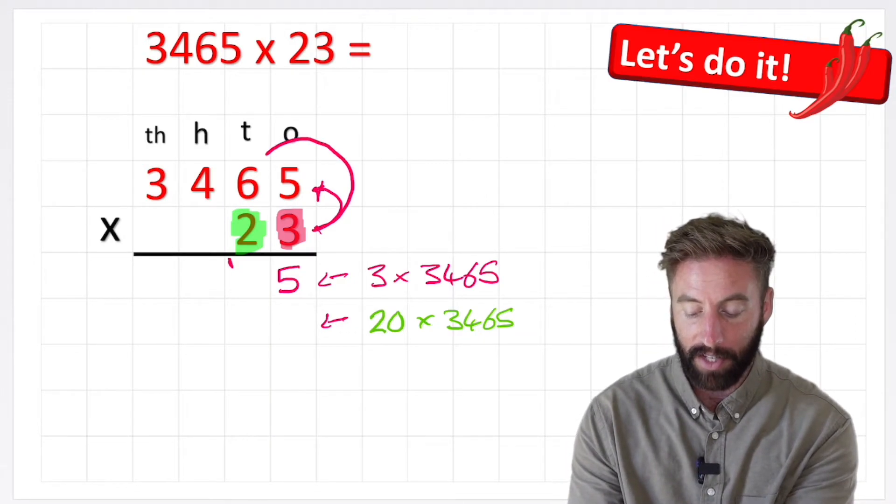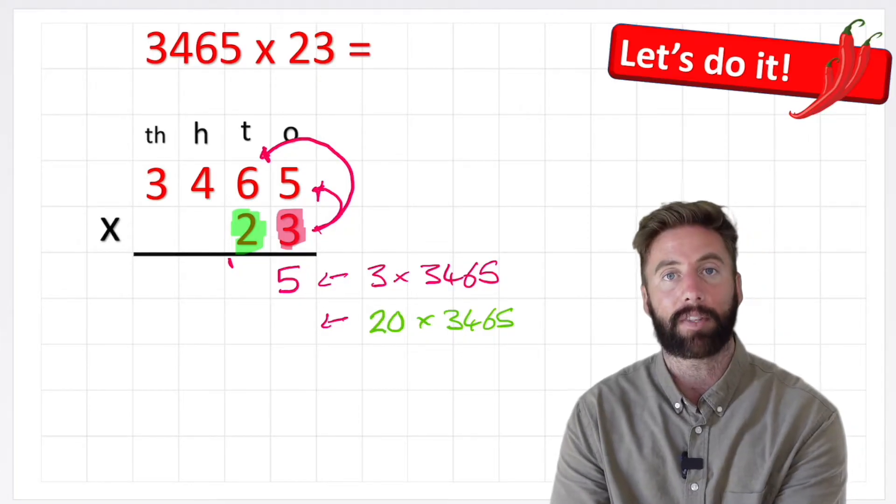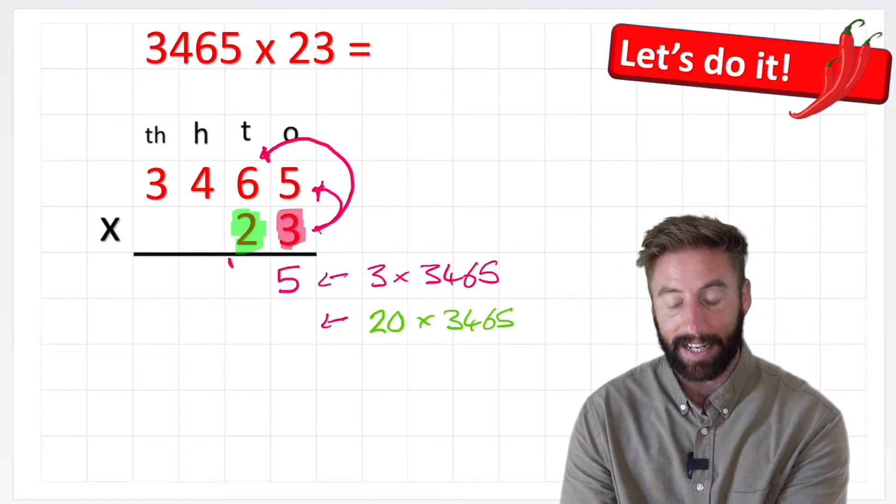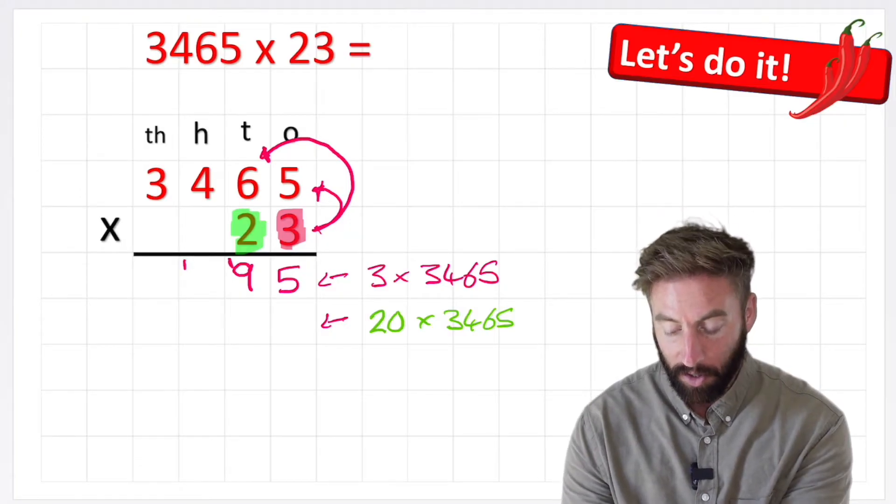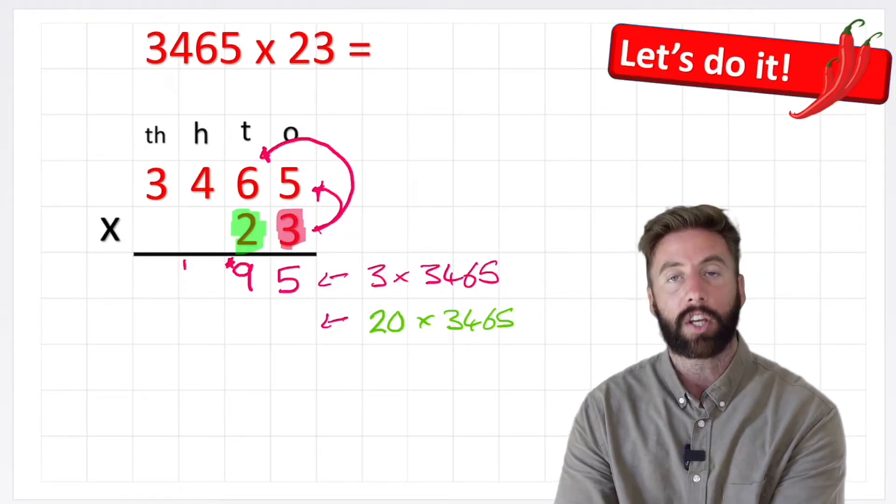Then I can do 3 times 6. 3 times 6 is 18, plus my 1 is 19. But the same rule applies, so I can put my 9 in here and carry my 1 across.